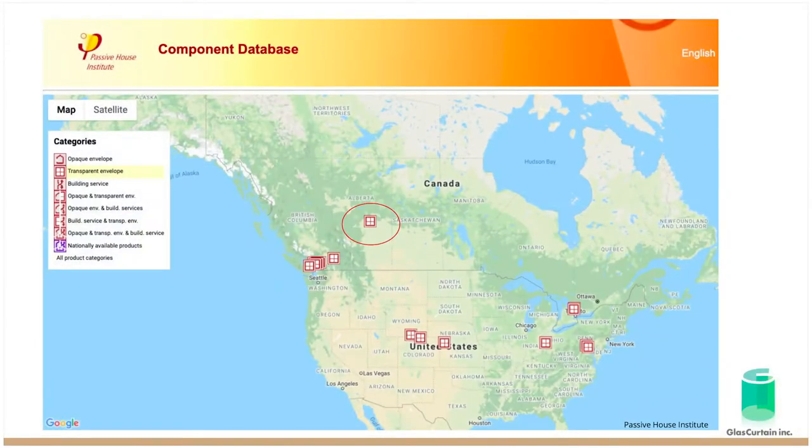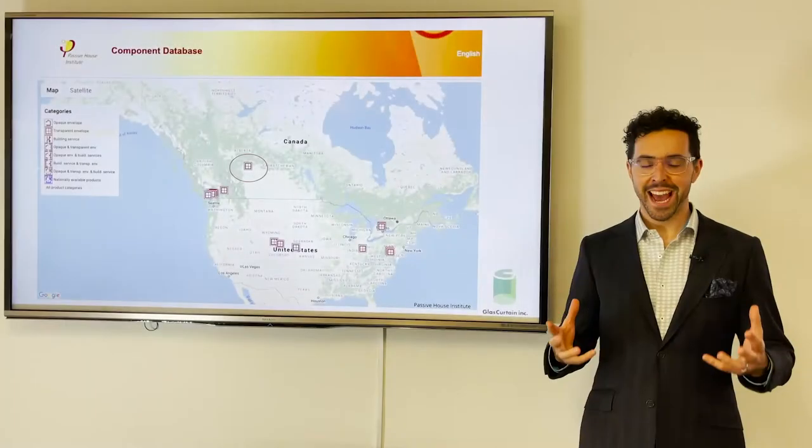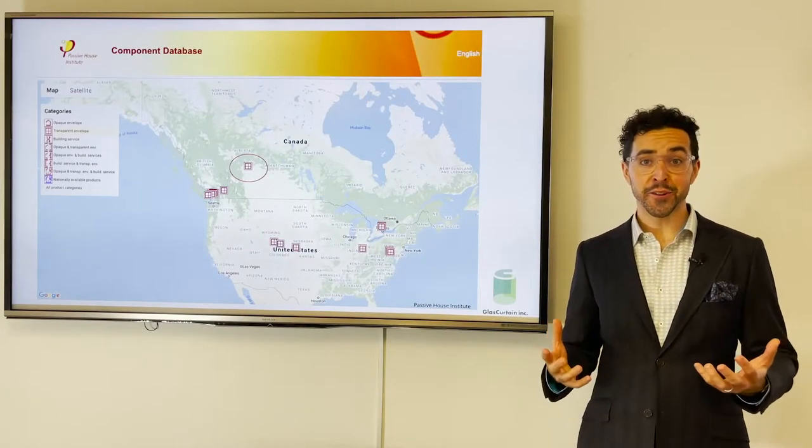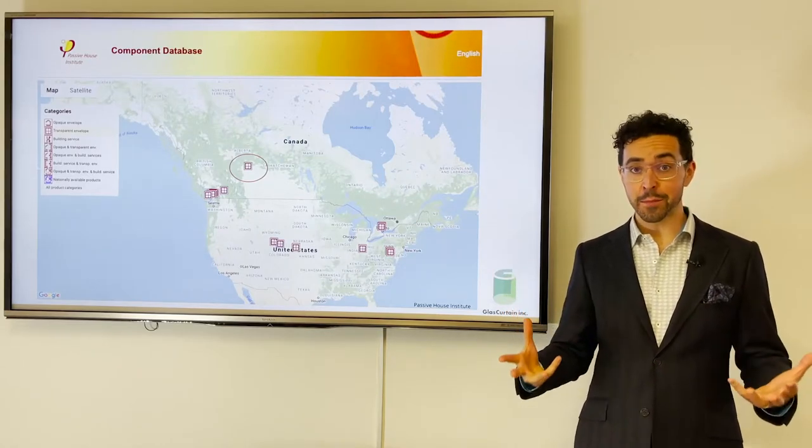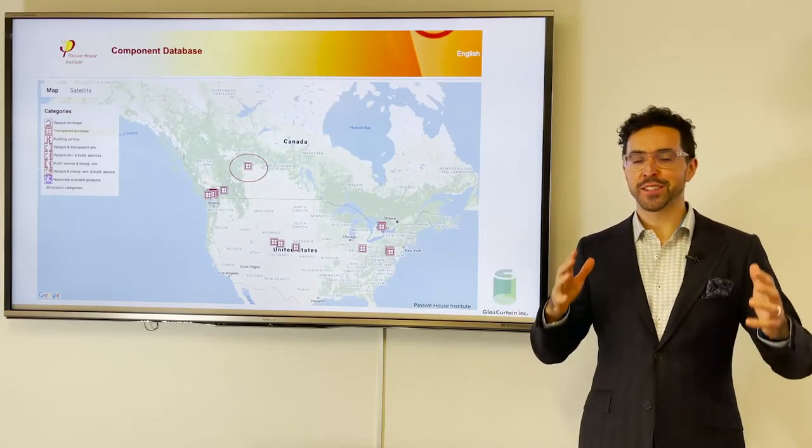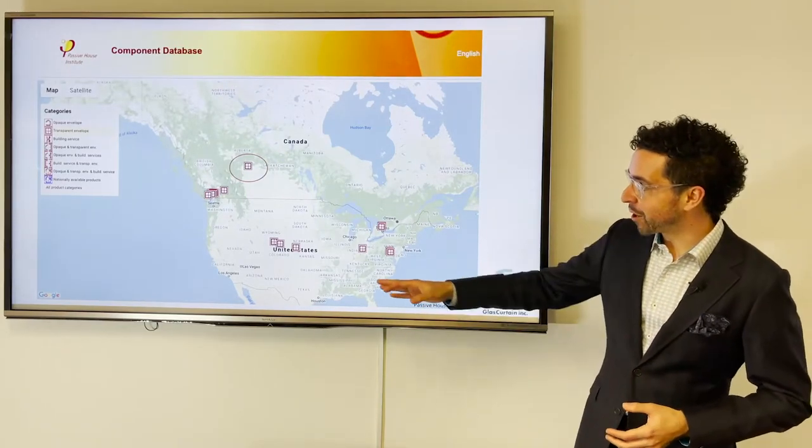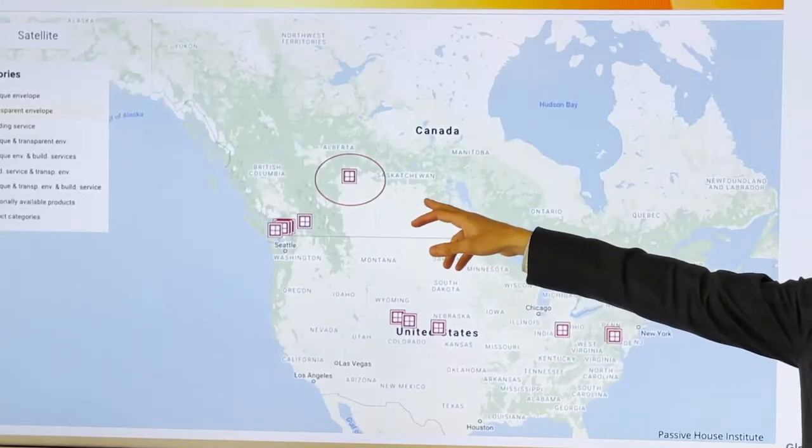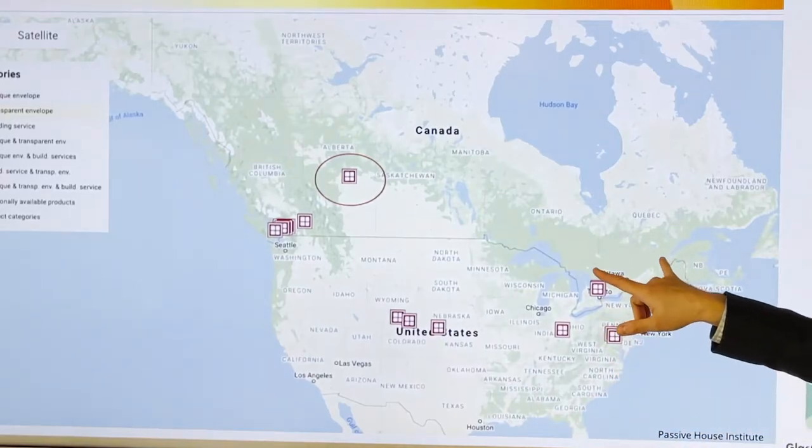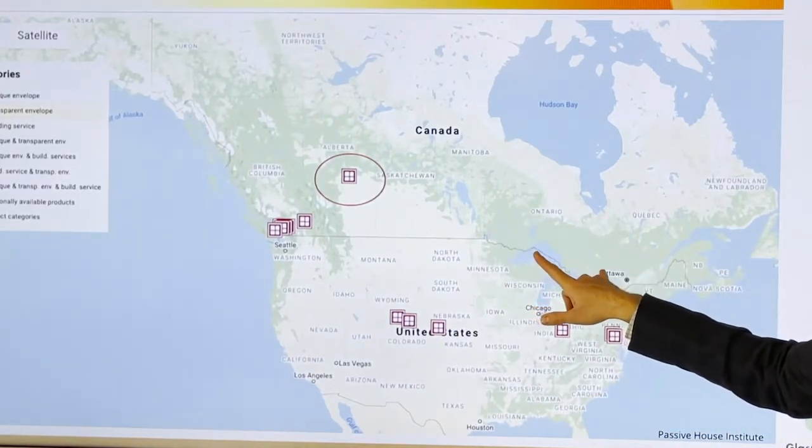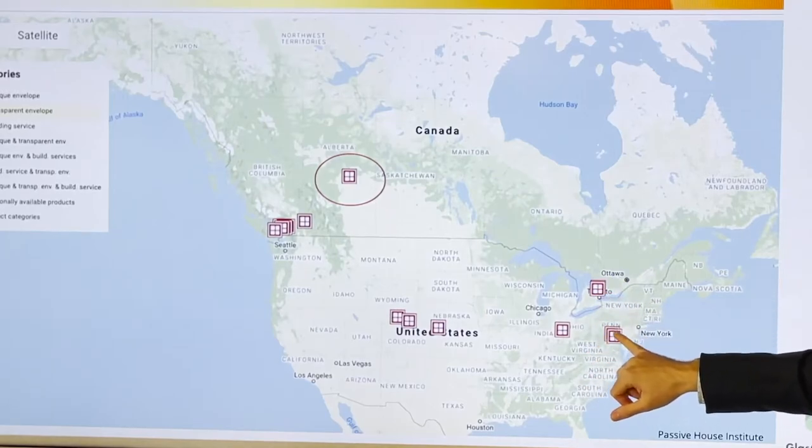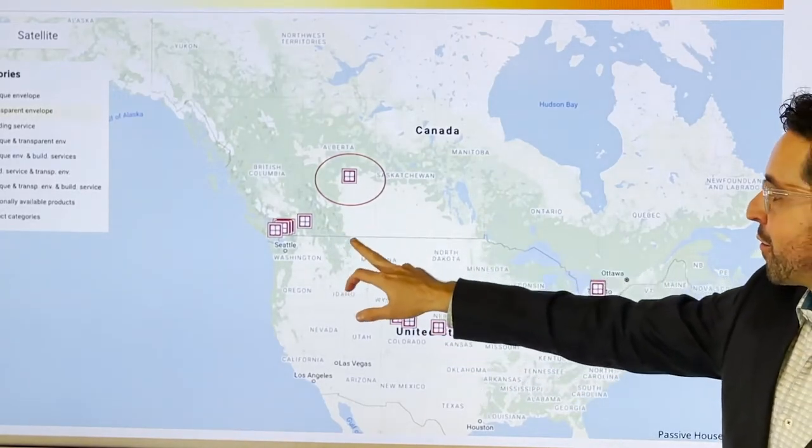And speaking of supply chains, everything that Glass Curtain does is manufactured in Canada. This is something that not only provides a lot of reliability in a world of tariffs and border craziness, but it also provides, we're also in a relatively central location within Canada, at least, between the sort of major hubs of Ontario and the Great Lakes area, and Vancouver.